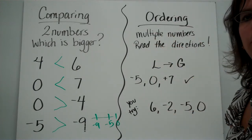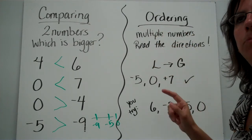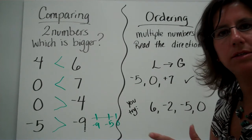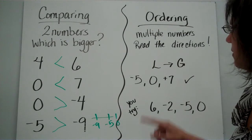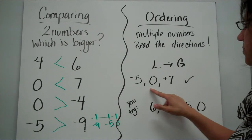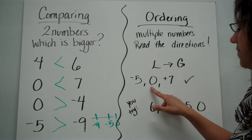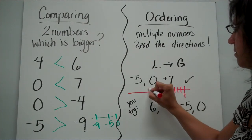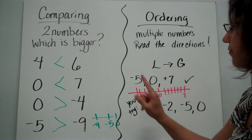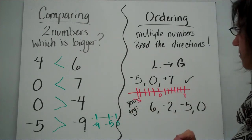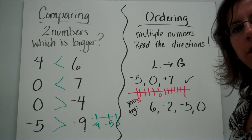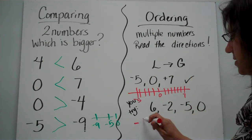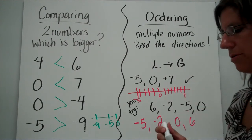Let's take a look at ordering. When you're ordering integers, you're looking at multiple numbers and trying to put them in order according to the directions. This is the biggest mistake students make — they forget to read the directions and put it in least to greatest when it's supposed to be greatest to least. Make sure you read those directions. Here, putting them in least to greatest: negative five is the smallest number, then zero, then seven. You can picture that on a number line. For the next example, the answer is negative five, negative two, zero, then six.